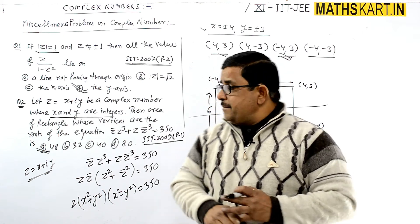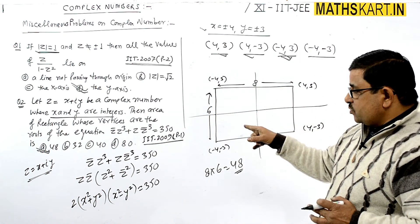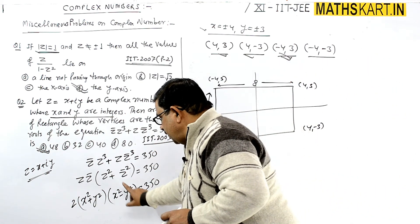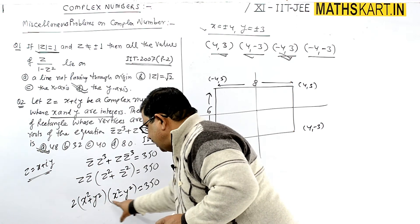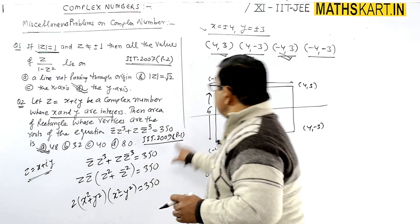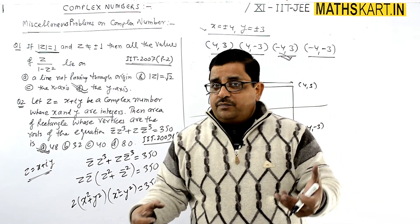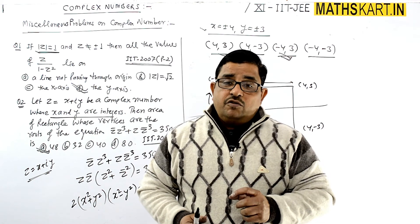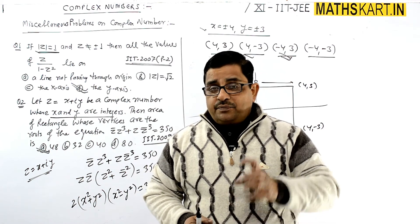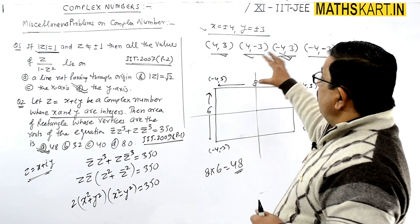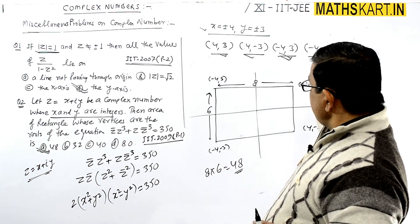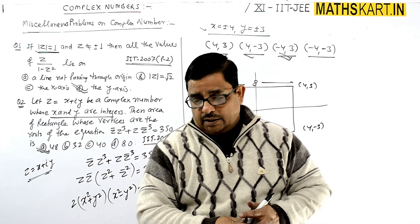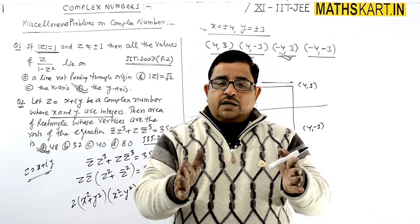The area of the rectangle is 8 times 6 equals 48, and option A is correct. This was the 2009 Paper 1 question. The key step was to factorize 175 and check which factorization gives integer values of x and y — only the first case worked.